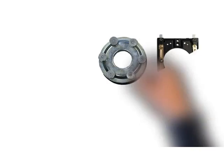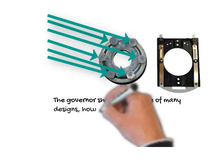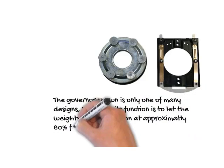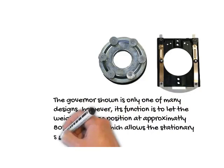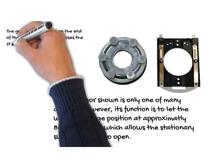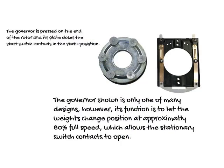The governor shown is only one of many designs. However, its function is to let the weights change position at approximately 80% full speed, which allows the stationary switch contacts to open. The governor is pressed on the end of the rotor and its plate closes the start switch contacts in the static position.